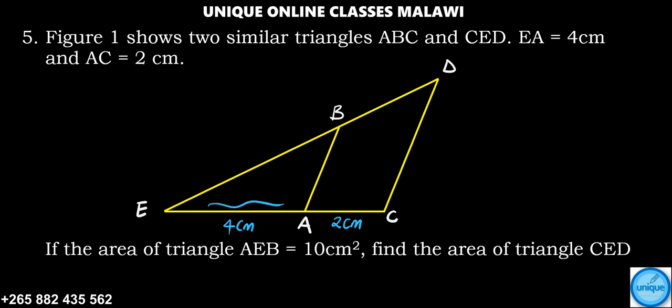So this is EA and AC that's 2 centimeters. The question is, if the area of triangle AEB is 10 centimeters squared, we should find the area for the bigger triangle, which is CED.